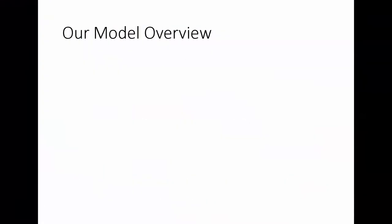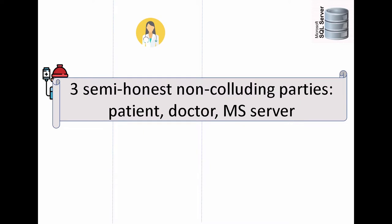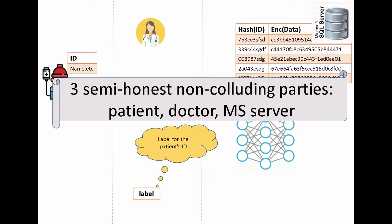We're going to talk about the model we devised to improve this situation — keeping the pros but eliminating the cons. For our model, we have three parties: the patient, the doctor, and the server. The input to our model is the patient's ID on the patient's side, and the server holds encrypted IDs. The output gives the doctor a label for the patient ID. We want to make sure that no one can learn the actual ID of the patient.